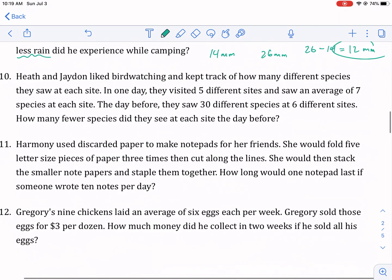Heath and Jaden liked bird watching and kept track of how many different species they saw at each site. In one day, they visited five different sites and saw an average of seven species at each site. So if there's an average of seven and there's five different sites, we can multiply that to see a total of 35 different birds. The day before, they saw 30 different species at six different sites. How many fewer species did they see at each site the day before? So we only need this number. It tells us the total that they saw. They saw 30 different species. That's a lot, by the way. 30 different species. And how many fewer species? So there's 30 this day, 35 the day before. That's five less species. Always put your units. And there we go.